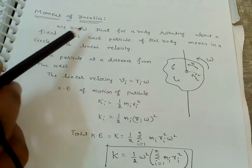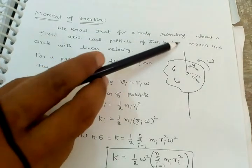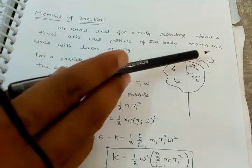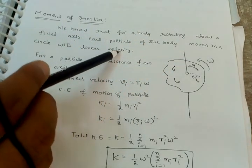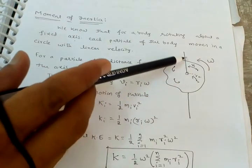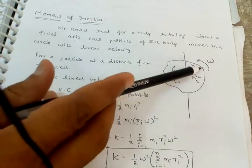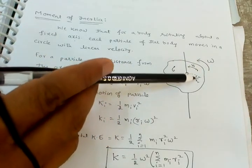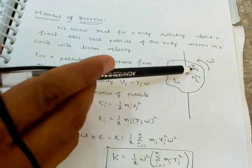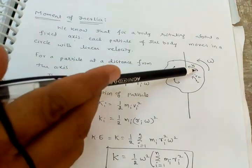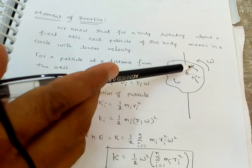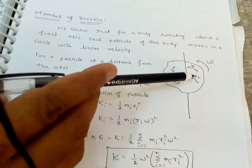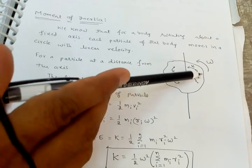We know that for a body rotating about a fixed axis, each particle of the body moves in a circle with linear velocity. This is the body, this is the axis of rotation, the body is moving with angular velocity omega. So particle 1, particle 2, particle 3, particle 4 — while the body is moving, each particle is moving with linear velocity v1, v2, and so on.